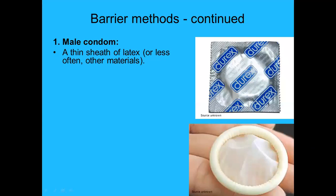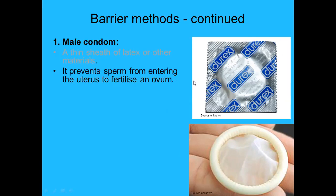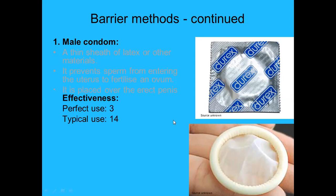The first one is the male condom — a thin sheath of latex, or very occasionally made of non-latex material for people who are allergic to latex. The condom has a little tip or reservoir for semen and a rim where it is rolled up, almost like the rim of a beanie. It prevents sperm from entering the uterus to fertilize an ovum. Effectiveness: perfect use 3, typical use 14 — quite a significant difference.